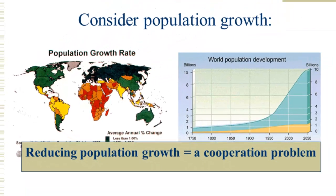Now, this is certainly a cooperation problem — reducing population growth. How do we get people to cooperate in this?